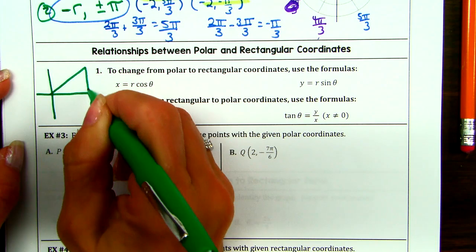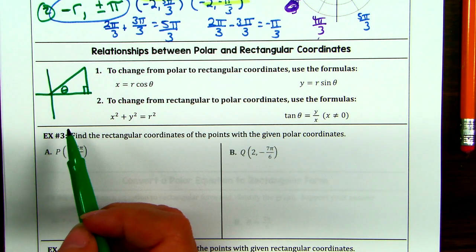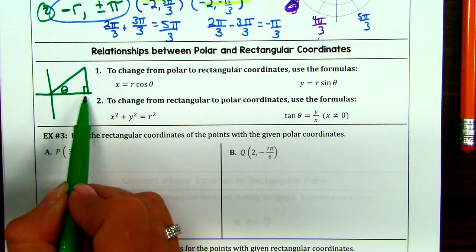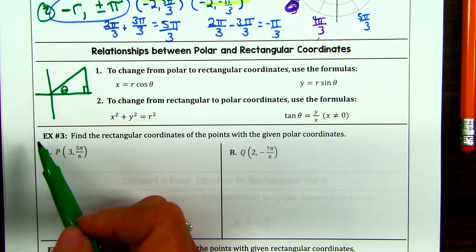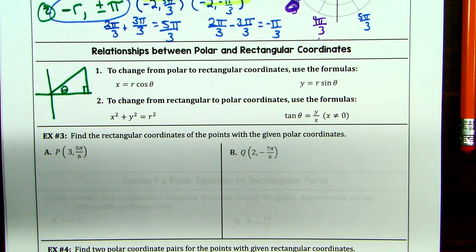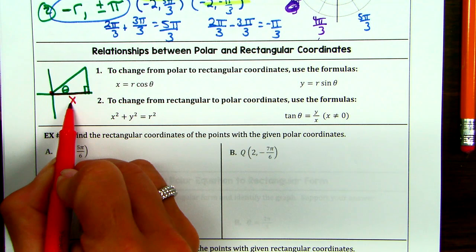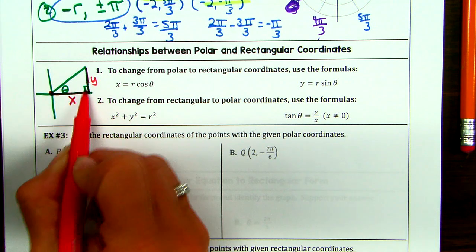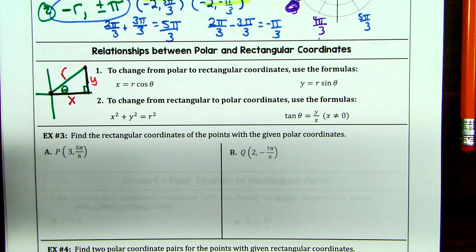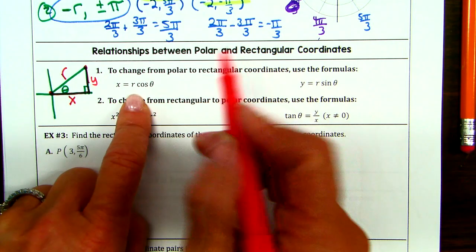Let me draw a right triangle — quadrant one is an easy one. We've labeled right triangles many different ways. In geometry it was a, b, c for the Pythagorean theorem. We can also call this x — the adjacent side — and y — the opposite side — like your ordered pair, and the hypotenuse is the radius r. That's where these formulas come from.